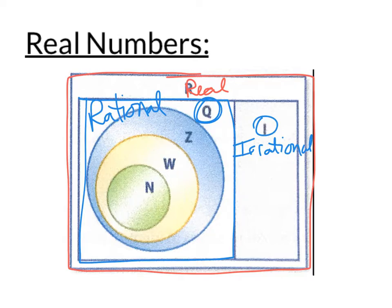Types of numbers that can't be written as fractions include certain square roots — not all square roots, because the square root of 4 is 2 and the square root of 25 is 5, those are nice numbers — but the square root of 2 is not. Pi is not a nice number either. The characteristic of irrational numbers is that their decimal representation goes on forever and never repeats.